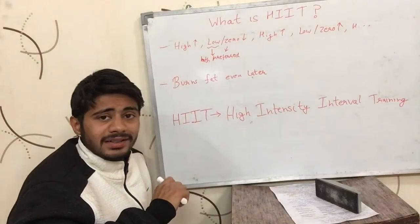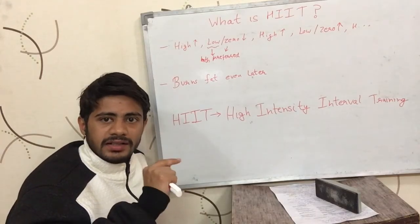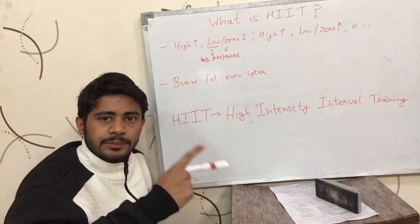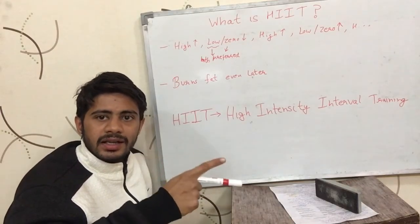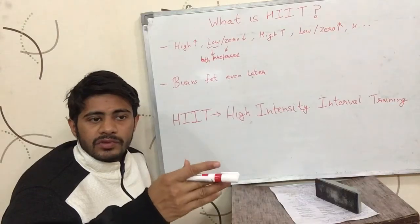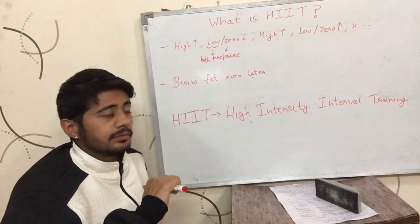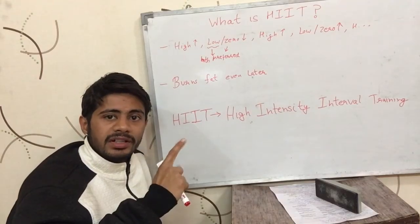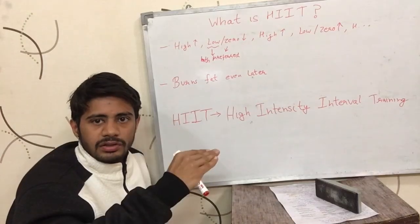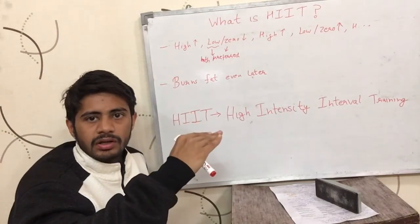When you are taking a low intensity period, I would suggest that you include both low intensity and zero intensity. For example, you ran for one minute at maximum speed, then you walked for one minute, then ran again, then walked for 1 or 1.5 minutes. You should not be running at maximum speed and then completely stopping abruptly — your body should make a gradual switch. So run at maximum speed, walk, and then stop.